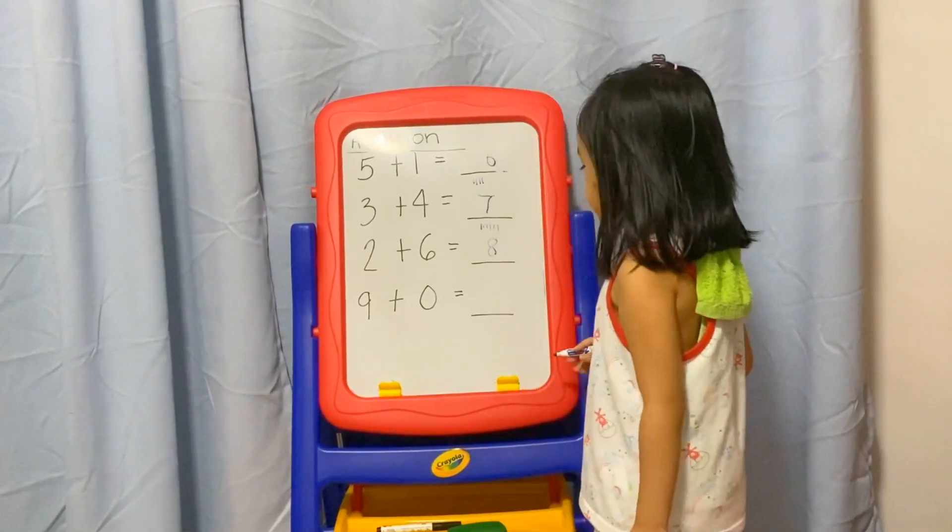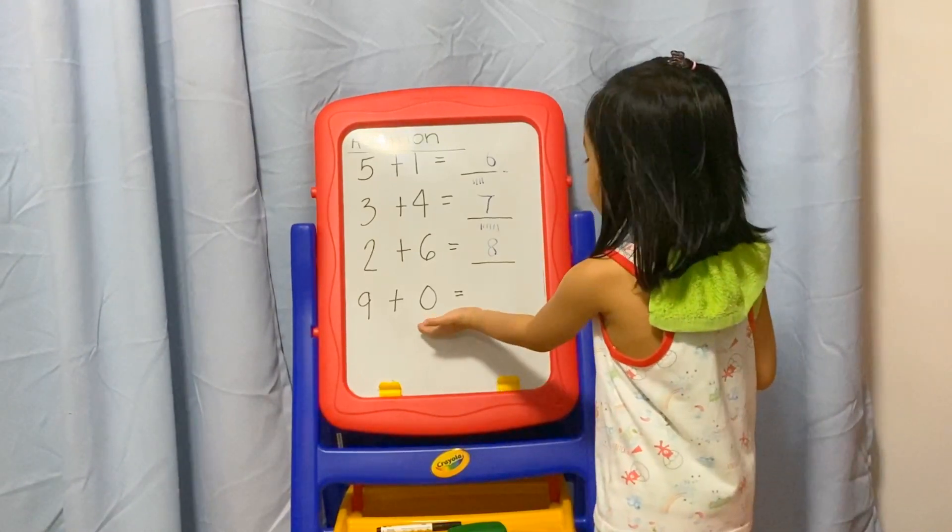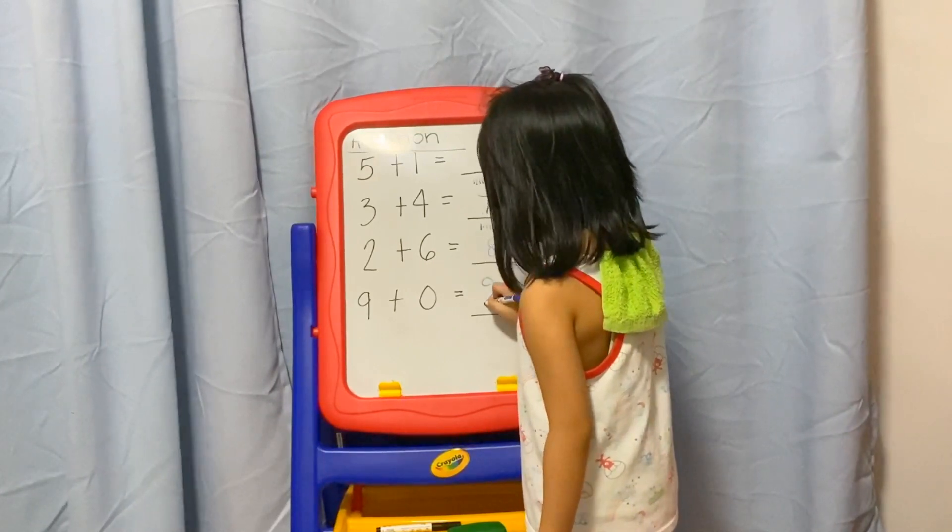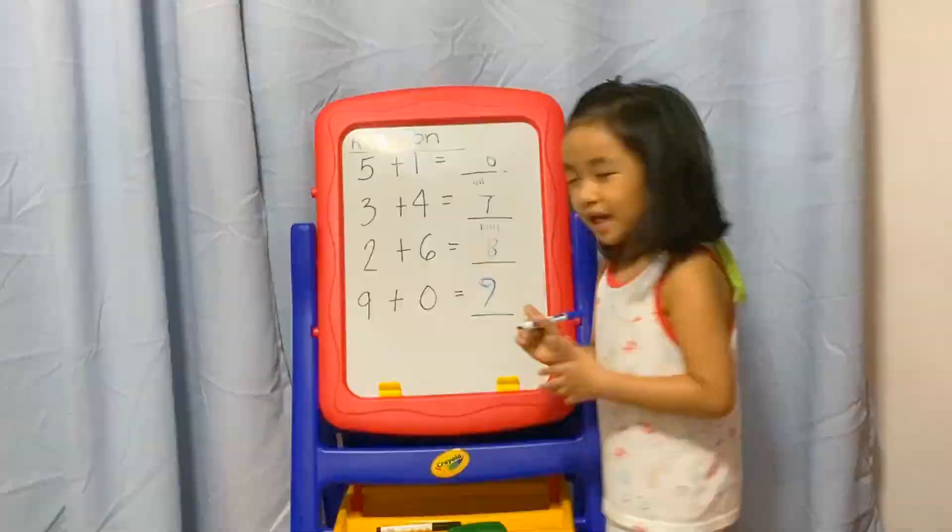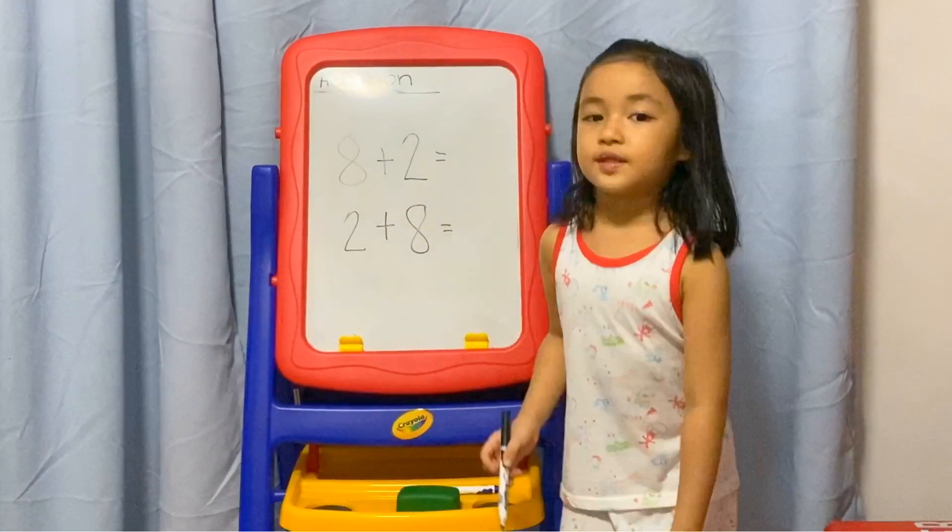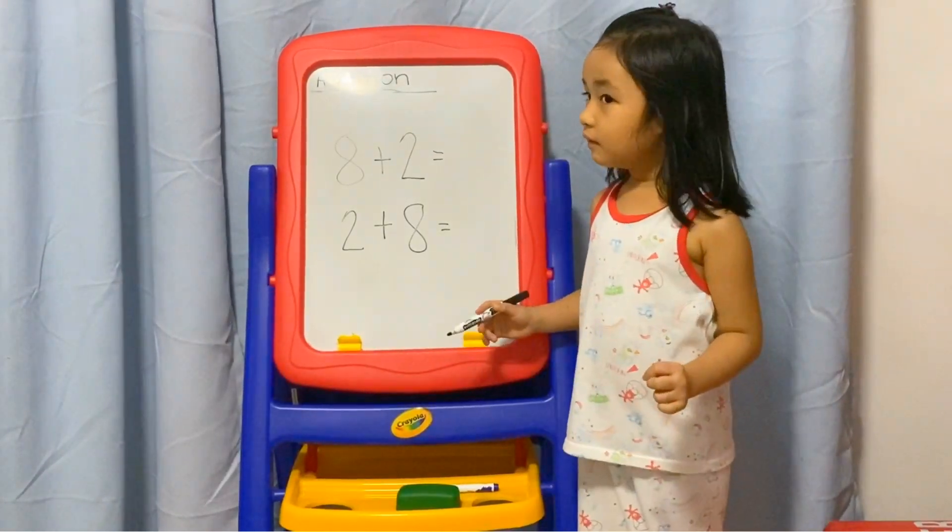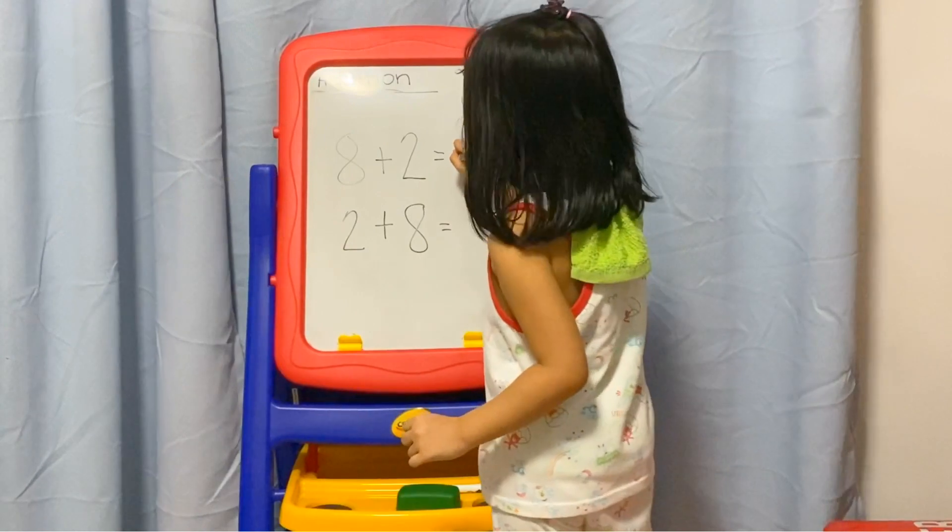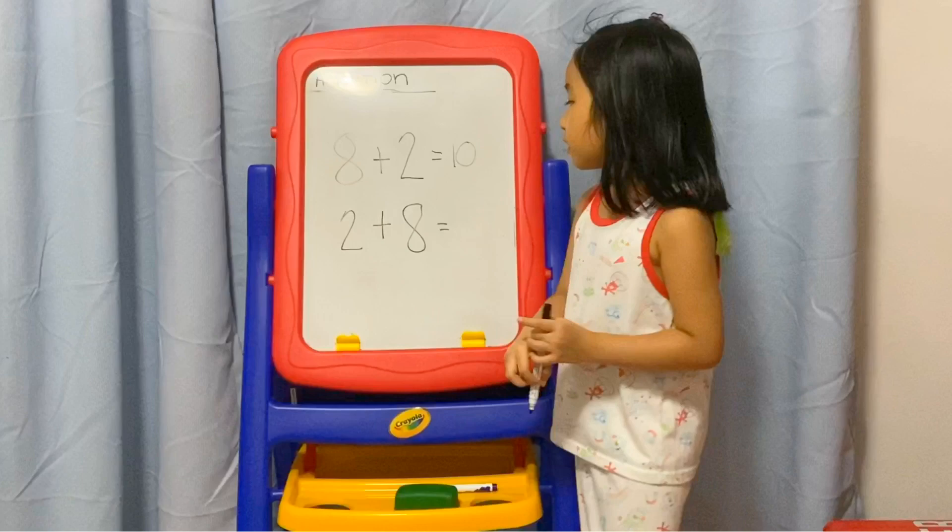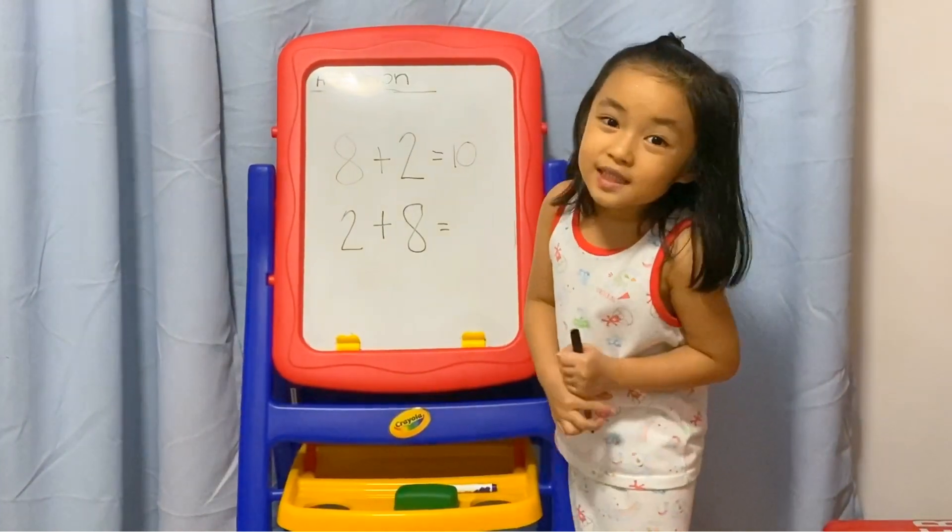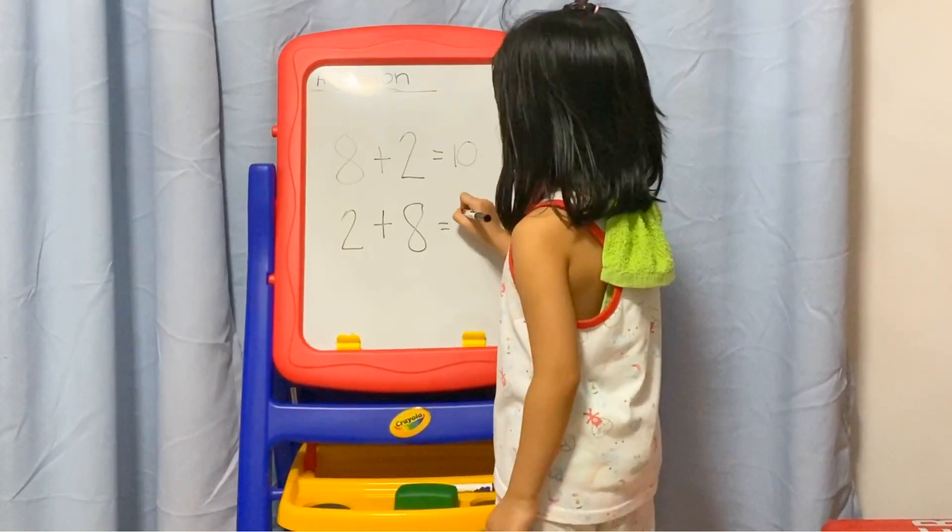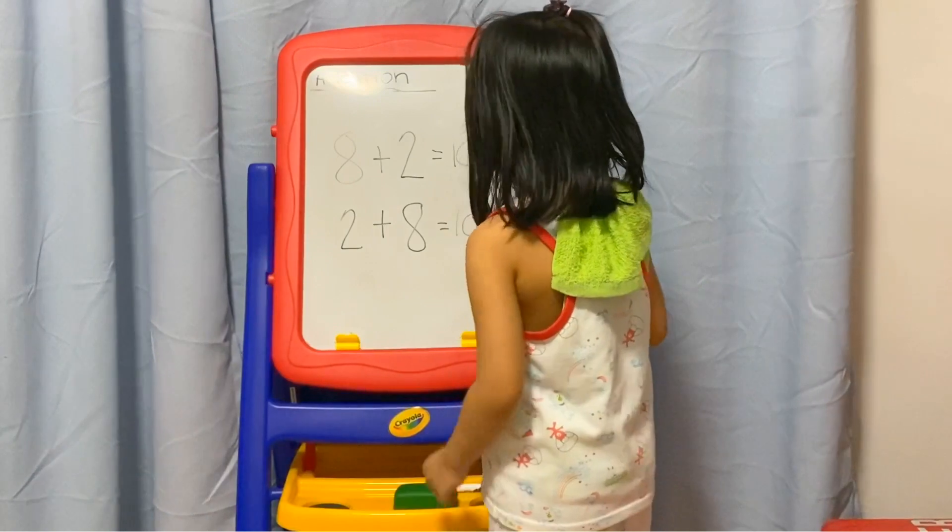Nine plus zero. There's no sticks. What is the total of eight plus two? It's easy. So it's ten.